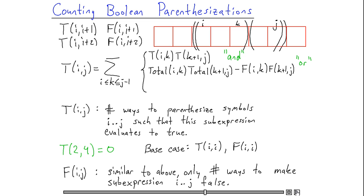The expression for or is slightly more complicated. I'm going to take what I call total(i,k) to be the total number of ways of parenthesizing the sub-expression from i up to k. And that's going to be just T(i,k) plus F(i,k). That's what I mean by total(i,k). So I'm going to take total(i,k) times total(k+1,j). That's going to give me the total number of ways I can parenthesize such that I'm splitting at the point k.